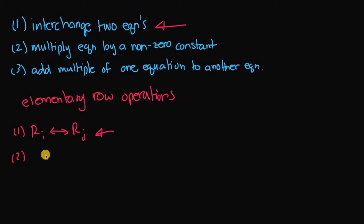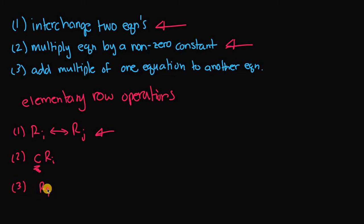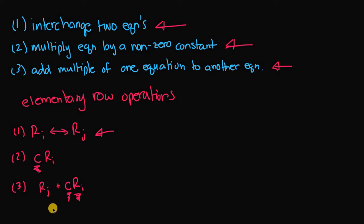The second rule is that we can take any row and multiply it by a non-zero constant c — exactly like rule two for systems of linear equations. The third rule is that we can take some row and add to it a multiple of another row ri. So we take ri multiplied by some non-zero constant c and add it to rj to get a new rj.